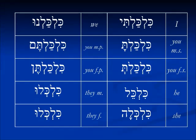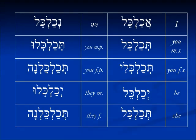Kilkala, kilkalnu, kilkaltem, kilkalten, kilkalu. Likewise in the imperfect tense, where you would have adaber, tidaber, you have achalkal, tichalkal, tichalkali, yichalkal, tichalkal, nechalkal, tichalkalu, tichalkalna, tichalkalu, tichalkalna.